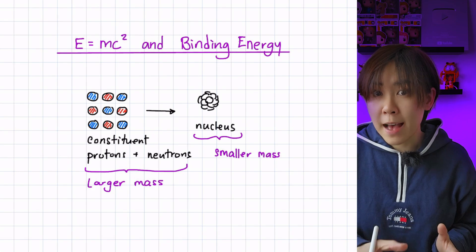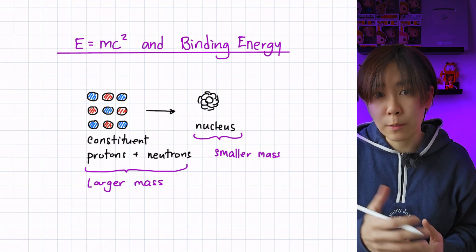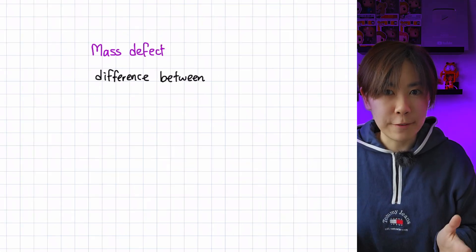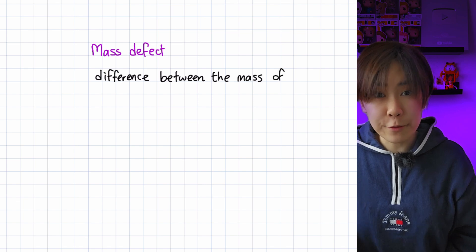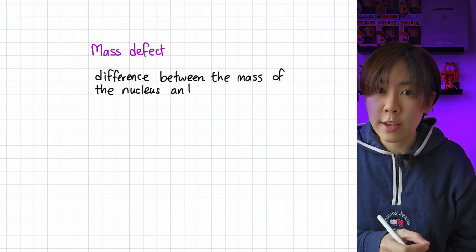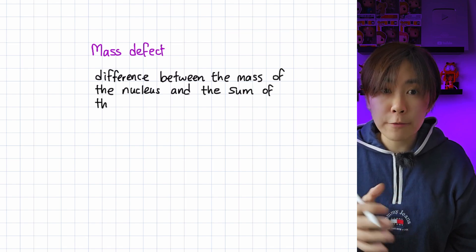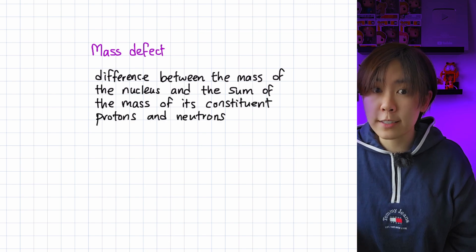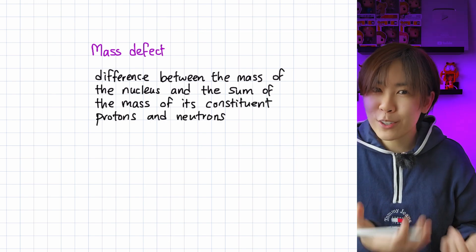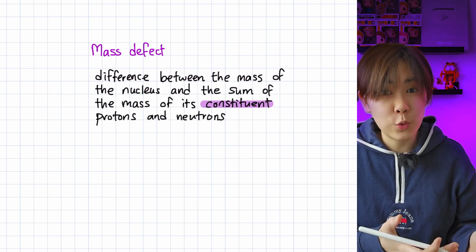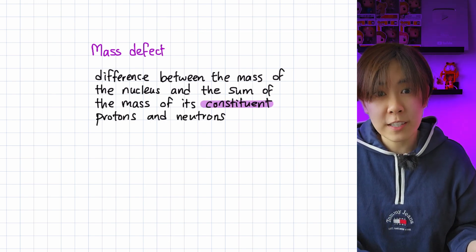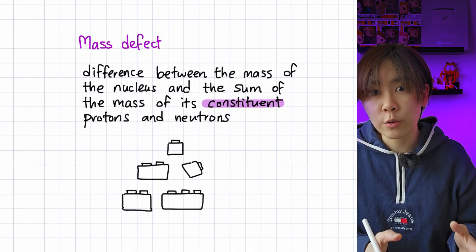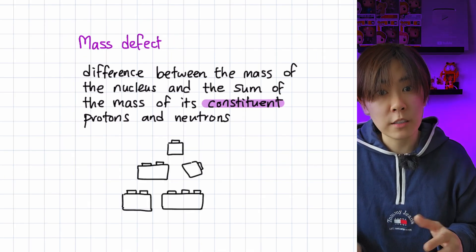The difference in mass is called the mass defect. We define mass defect as the difference between the mass of the nucleus and the sum of the mass of its constituent protons and neutrons. We often use the word constituent in nuclear physics because it means the individual parts or the building blocks of something.